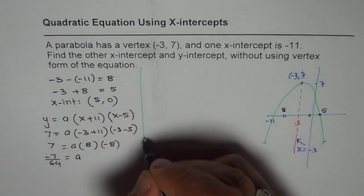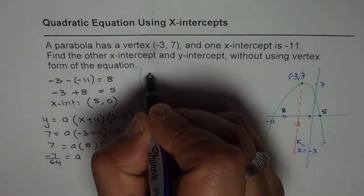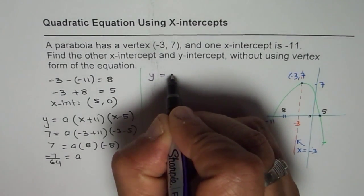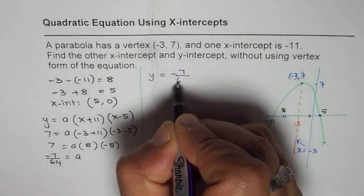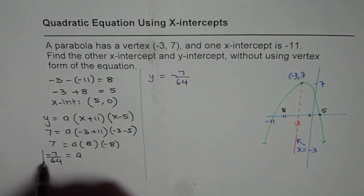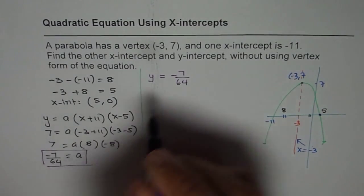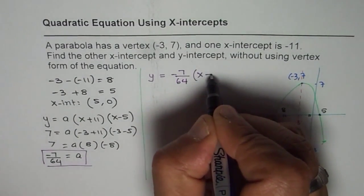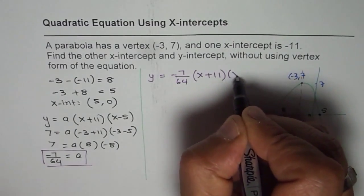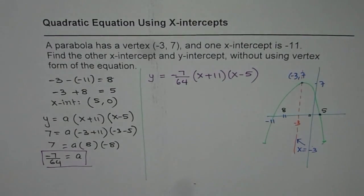So that is the value of a. So with this value of a, we actually get our quadratic function. So the equation of the quadratic function is y equals to -7 over 64. That a value is calculated here, which is being used, and then we have x-intercepts, (x + 11) times (x - 5).